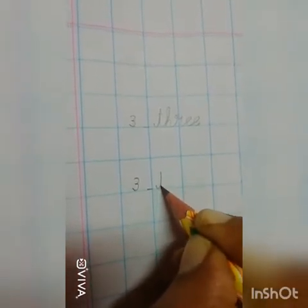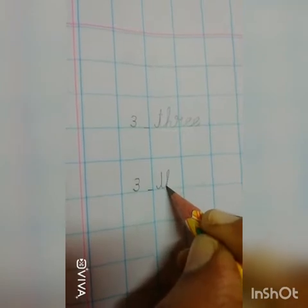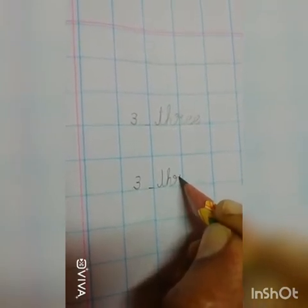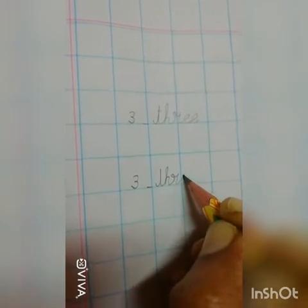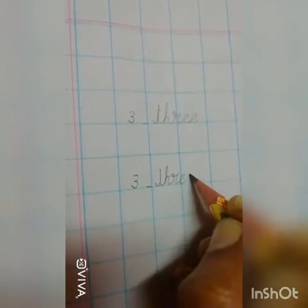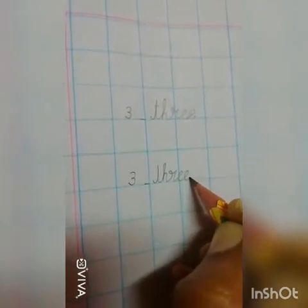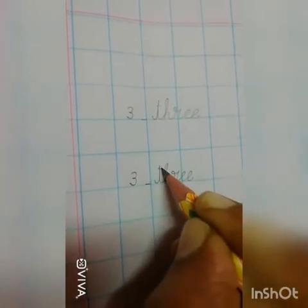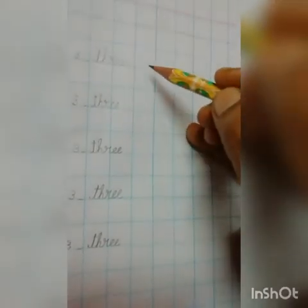3. T, H, R, E, E. Now you can take your hand. Draw one small sleeping line for T. Now leave two columns and start writing another sign.